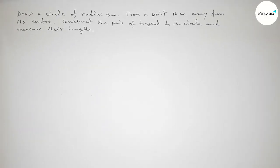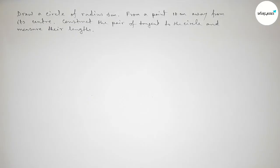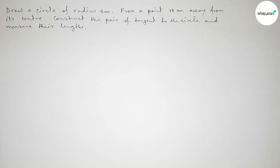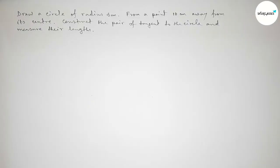Hi everyone, welcome to SI Share Classes. Today we are constructing an important geometrical construction. The question is: draw a circle of radius 6 centimeters, then from a point 10 centimeters away from its center, construct the pair of tangents to the circle, and then measure their length. Let's start the video.